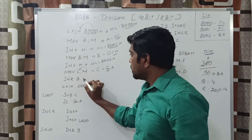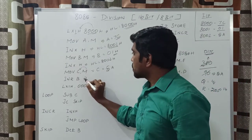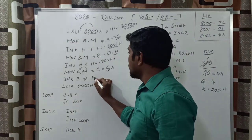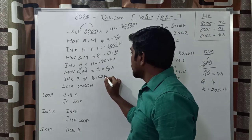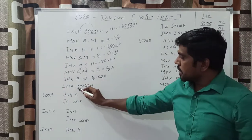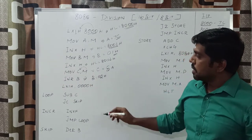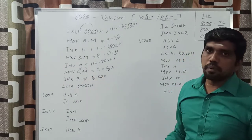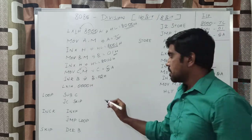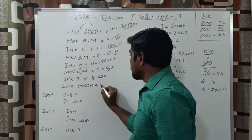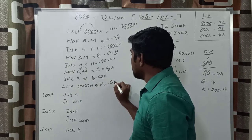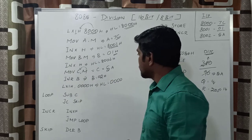Next, INR B. Before execution, B value is 01h; after execution, B value becomes 02h. Then, LXI H, 0000h — you clear the HL pair because you will store the result in the HL pair register. After execution of this instruction, the HL pair value is cleared to 0000h.